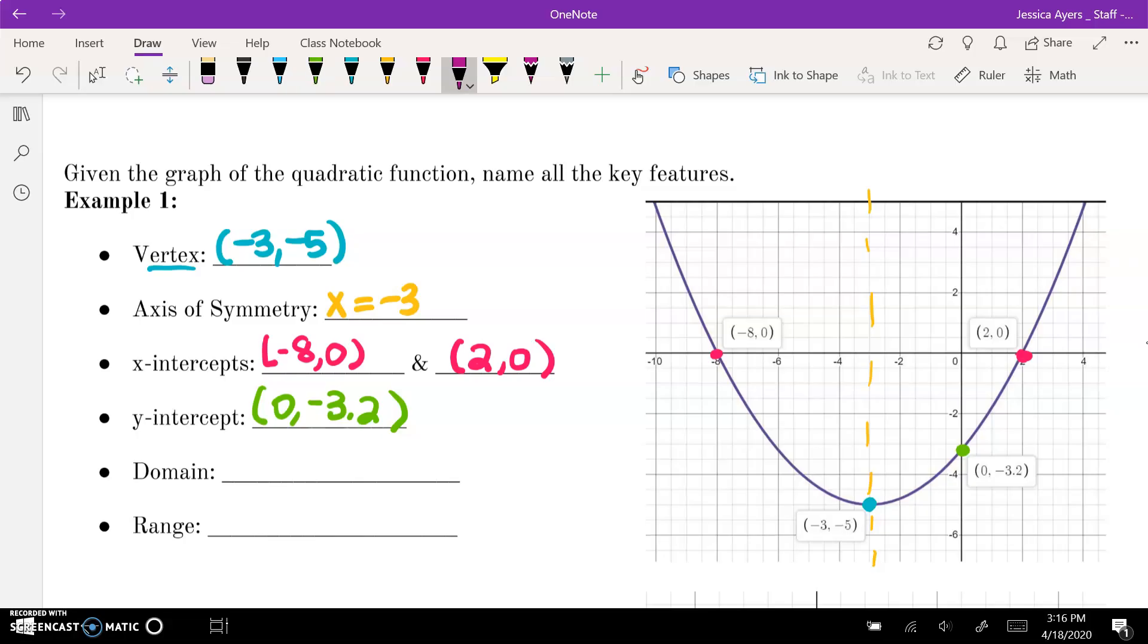Now our domain for a quadratic, because we know there are two arrows up here making our graph go on forever, which means that it goes from negative infinity to positive infinity. Our range is going to go from the bottom of our graph all the way up. So my lowest point of my graph is negative five. That is included, so I would use a square bracket. So it would be negative five to infinity. Infinity is always rounded because we can't actually get to infinity.